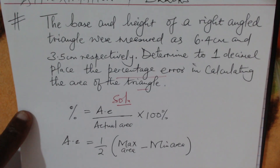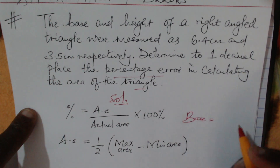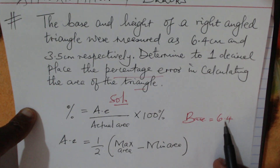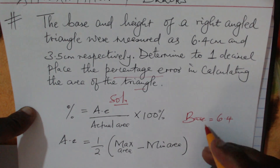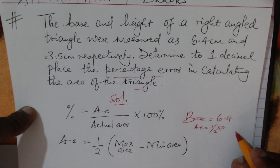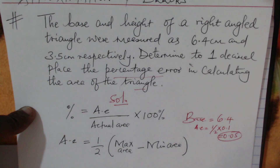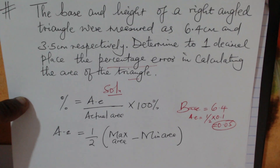We are given the height and the base. The base is 6.4, so we need to know the limits under which this base lies. The smallest unit of measurement — since this is given correct to one decimal place — is 0.1. Therefore the absolute error is one half times the smallest unit of measurement, which is 0.1, giving 0.05.